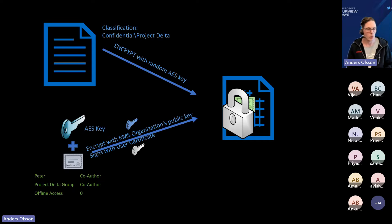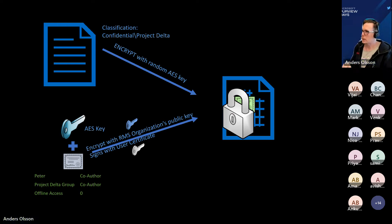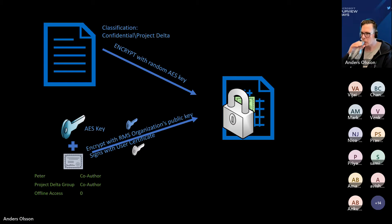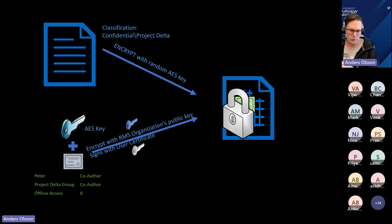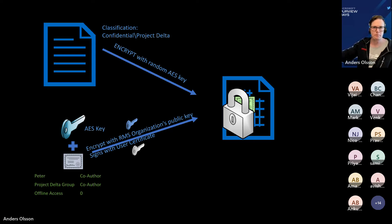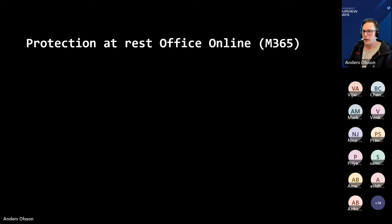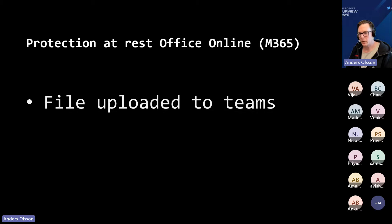We have encrypted the content and we have the policy for the file. What will happen is we take this unique content key, put it together with the policy, then encrypt the unique content key with the organization key. The public part of that was done on Peter's machine — it will encrypt the content key and the policy. And it will sign this with Peter's certificate. That is the RMS protected file. And what did Peter do? He saved the document within the team site.